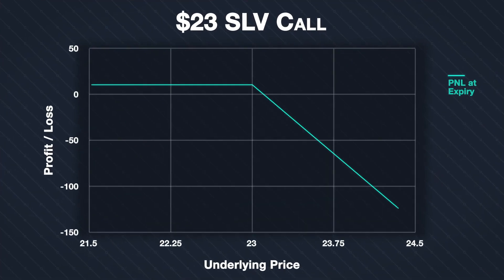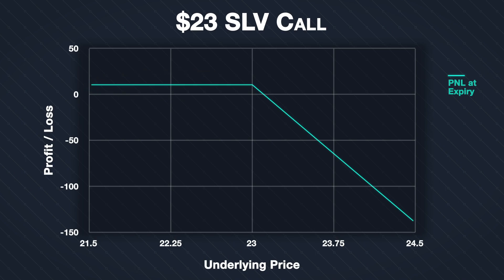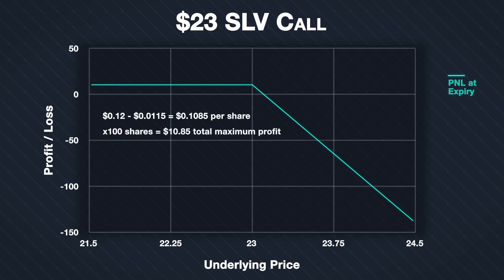Given all the parameters we just covered, this is the P&L chart at expiry for this option position. For any price of SLV below the strike price of $23, we will make the maximum possible profit for our short call. This maximum profit is limited to the premium we collected minus fees. We collected a premium of 12 cents per share, and the fees were $0.0115 per share, giving us a total credit of $0.1085 per share. As the contract multiplier is 100 and we sold one contract, this equates to a total maximum profit of $10.85 — the amount shown as the total credit when we placed the order on Tastyworks.